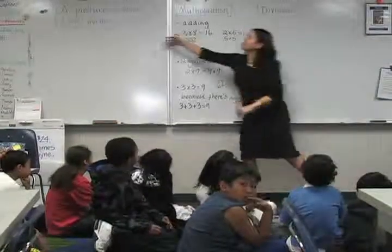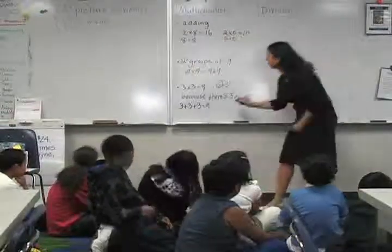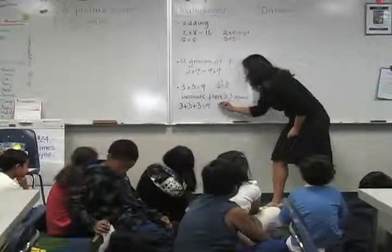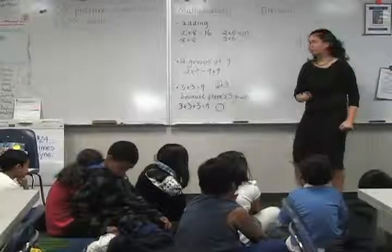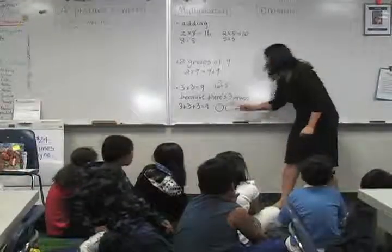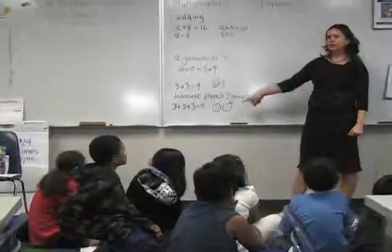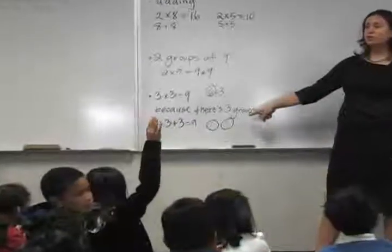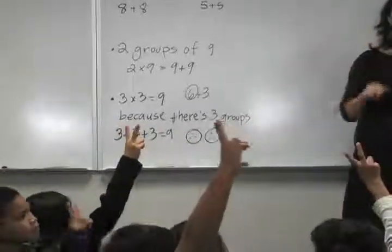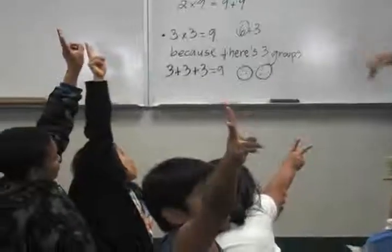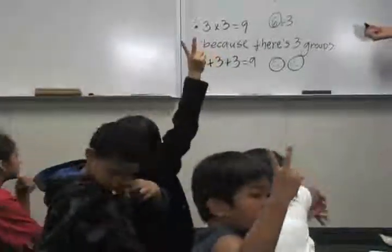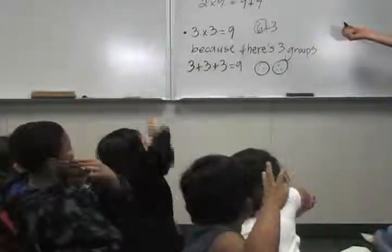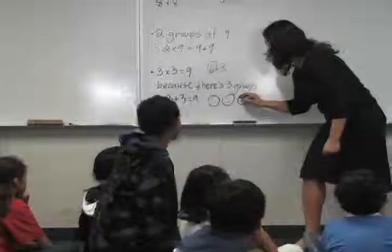So I'm going to draw a picture because we're going to be thinking about pictures for 3 groups of 3. So I might say here's 3. Here's a group. Here's 3. Here's a group. How many groups of 3 do I have? 3. How many groups of 3 do I have? Show me on your fingers. Some people are showing me and I just showed you 2 groups of 3. So how many groups of 3 do we want? 3. 3 groups of 3 for this one. So here's 3 groups of 3.